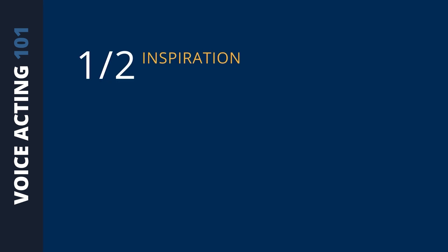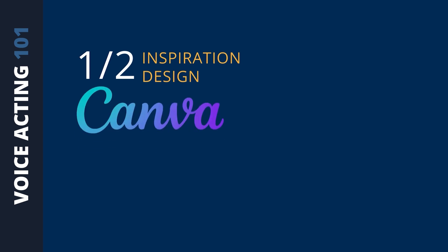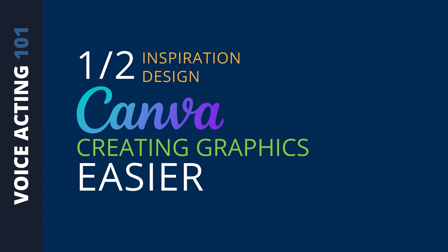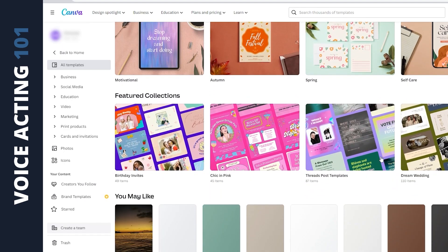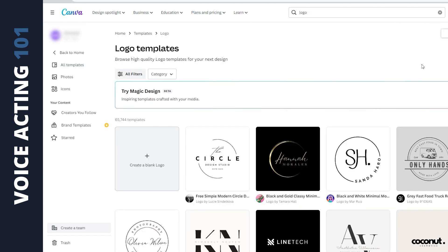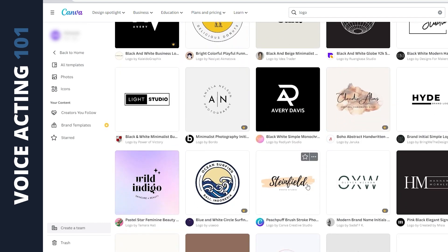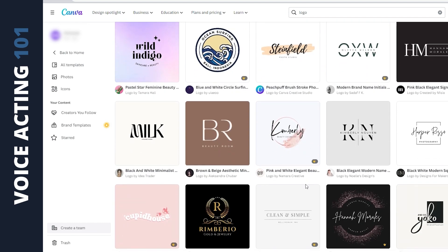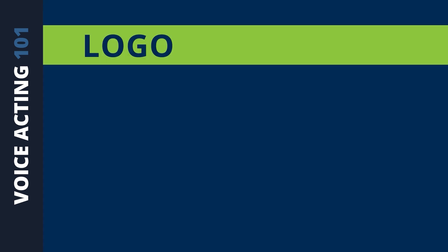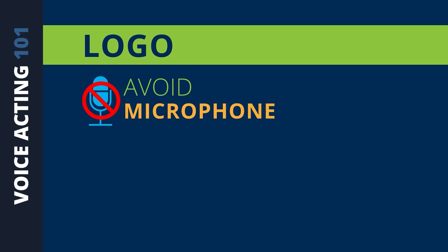Next up is a tool that is kind of half inspiration and half design, and that is Canva. I've used Photoshop for years, but Canva has been around for a while now and it just makes creating graphics easier because they have hundreds of beautiful templates to start from so you don't have to start from scratch every time. They even have logos on the website. If you don't already have a logo for your voiceover business, you can go to Canva, search for logo, get a library of graphics to start with, and easily customize it to fit your needs. I would avoid using a microphone in your logo — it's been overused and everyone seems to have one.